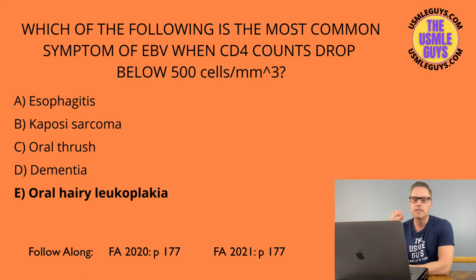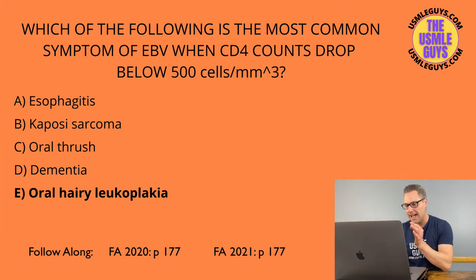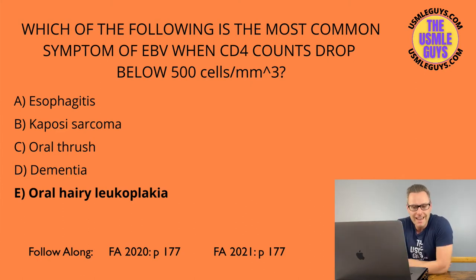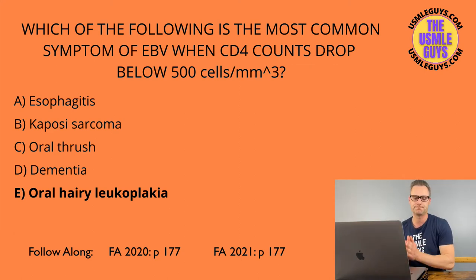Candida albicans presents with oral thrush — watch for scrapable white plaques in the mouth and pseudohyphae on microscopy. EBV causes oral hairy leukoplakia, with plaques on the lateral tongue that are unscrapable — this differentiates it from candida. HHV-8 is responsible for Kaposi's sarcoma, where biopsy findings show lymphocytic inflammation. HPV increases the risk for cervical cancer or anal cancer, especially anal cancer in homosexual men.